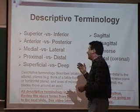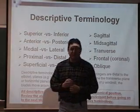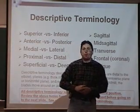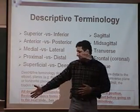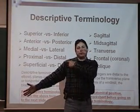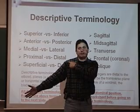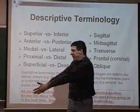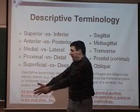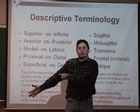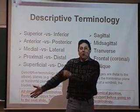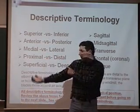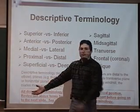Looking at proximal and distal, those go with the extremities. Distal is furthest away from the point of attachment. If you look at my right shoulder, my right arm, the point of attachment is my shoulder to the appendicular skeleton, to the axial skeleton. You would say my ring finger is distal to my elbow. Or, you might say my bicep muscle is proximal to my thumb.